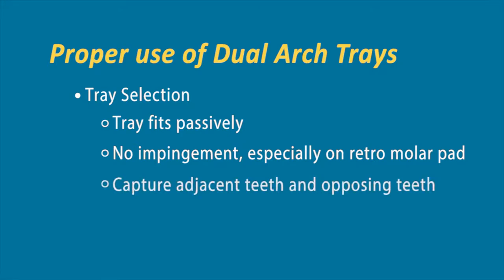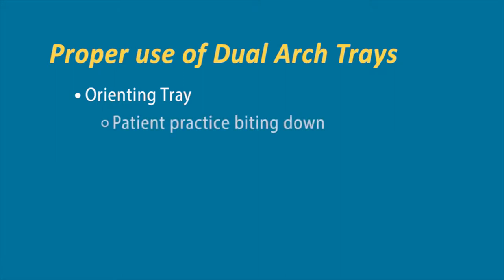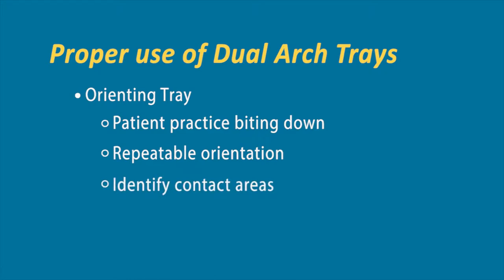In sizing, you want to make sure you're capturing the adjacent teeth and the opposing teeth. Triple trays come in longer or shorter versions depending on the company—the more teeth you capture, the better off we're going to be. Once you have the proper dual arch tray selected, orient it correctly: have the patient open and close, practice biting down, and make sure they do not hit any lingual or buccal arch wires. You want repeatable orientation—take the tray in and out a couple of times—and identify the contact areas so when the patient bites down, they're not contacting the tray at all.